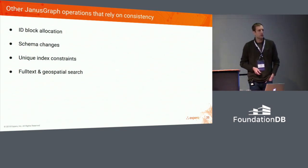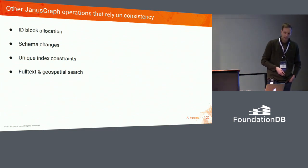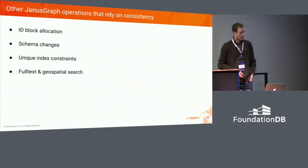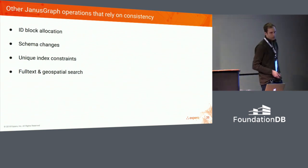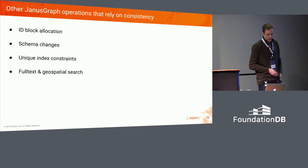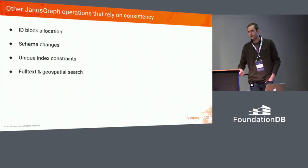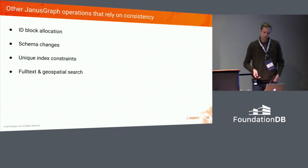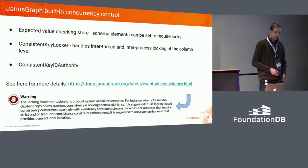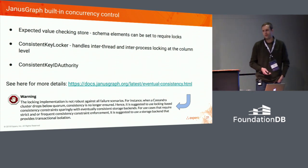Some other operations that rely on consistency: JanusGraph vertices have IDs. ID block allocation in a distributed system means you don't want two vertices to end up with the same ID. Schema changes need consistency across a cluster. Unique index constraints. And then JanusGraph allows you to plug in third-party search indexing — so now you're storing data in, say, Cassandra and Elasticsearch, and ideally those stay in sync but sometimes they don't. JanusGraph has a warning in its documentation that basically says this works most of the time, probably. So obviously there's a lot of room for improvement. Right now it's largely left up to the developer to plan ahead and assume you're not going to get these guarantees — it's extra complication that people miss.